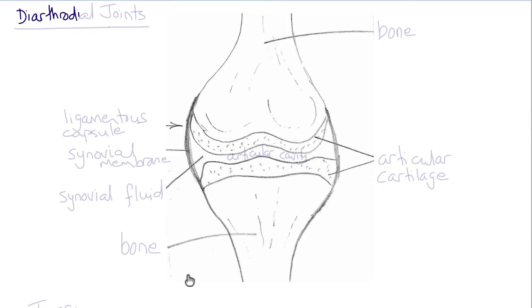So let's take a look at a typical diarthrodial joint between two long bones. Bones here and here. This is the ligamentous capsule, and the inner surface of it is lined by the synovial membrane.